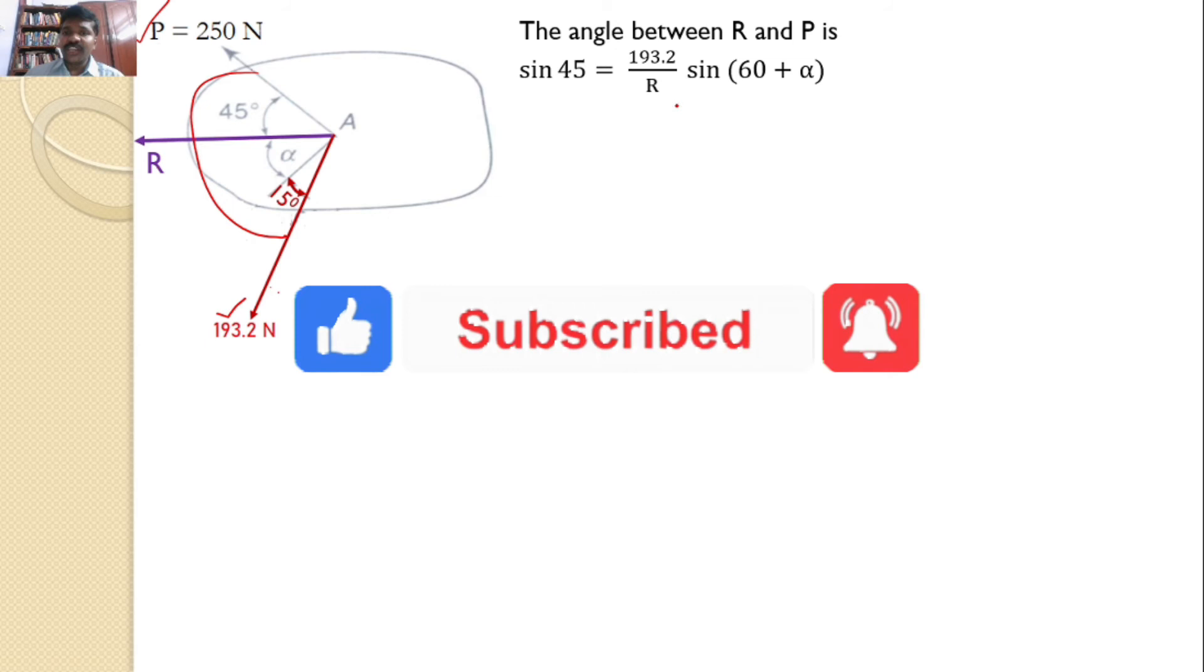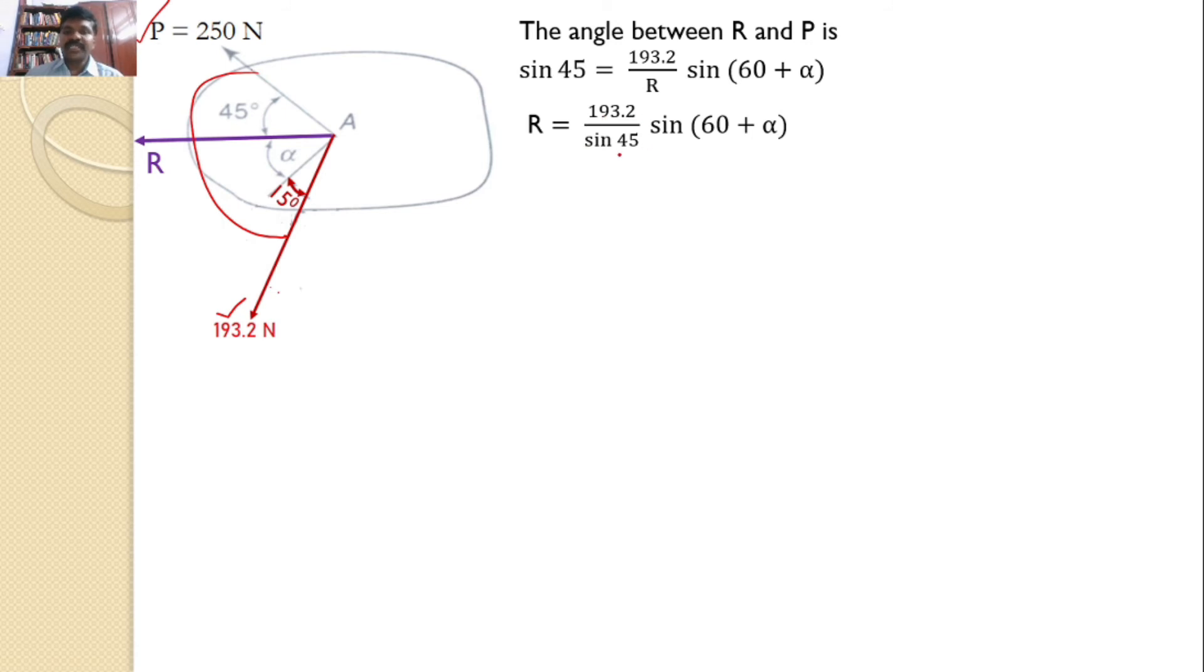So, I will get one equation in terms of R and alpha or I can say R equals 193.2 by sin 45 into sin 60 plus alpha. I can rearrange this equation. And then upon solving this, I will get R equals 273.23 into sin 60 plus alpha. Let this equation is 1.